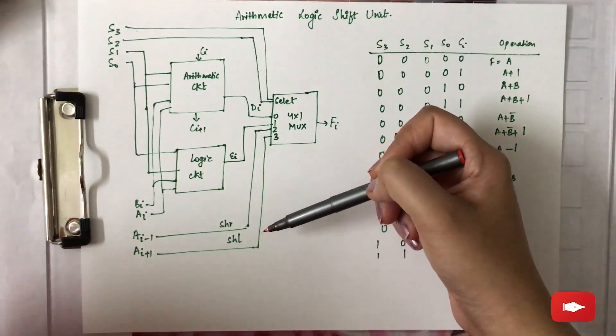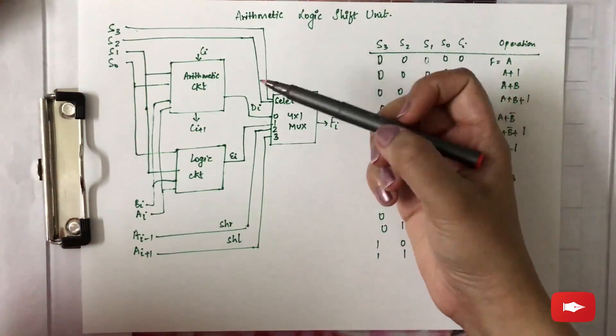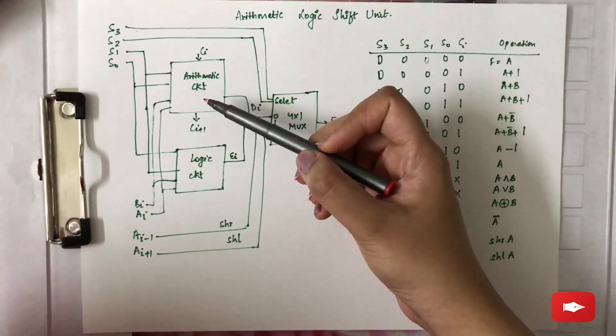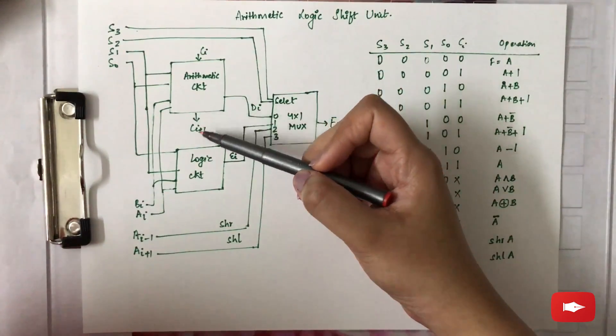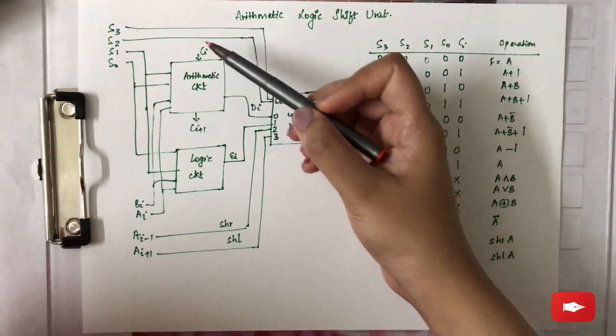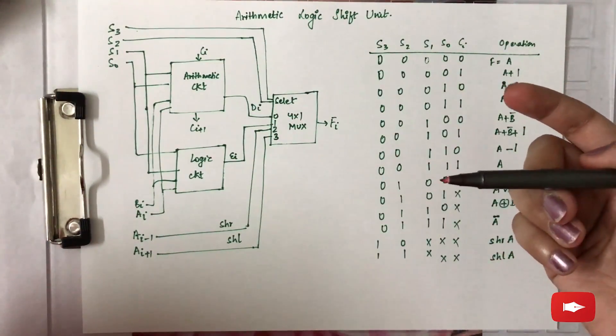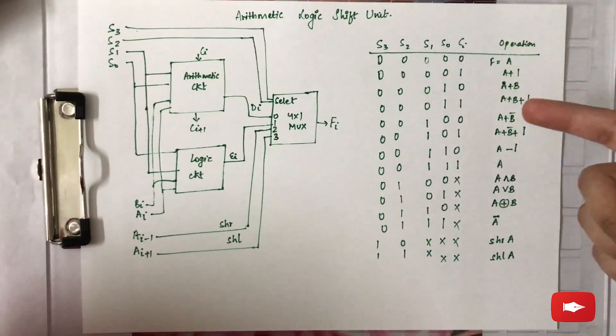Also, the output carry ci plus 1 of this arithmetic stage must be connected to the input carry ci of the next stage. This is basically only for the arithmetic operations.